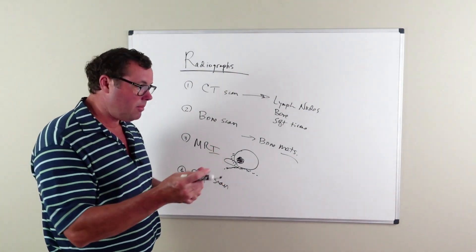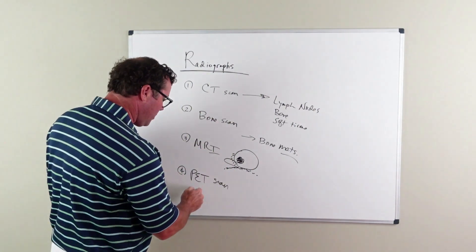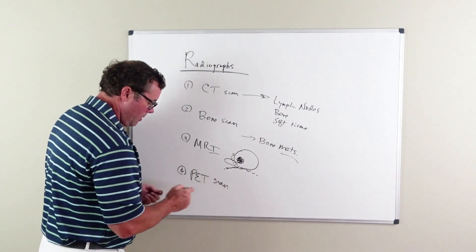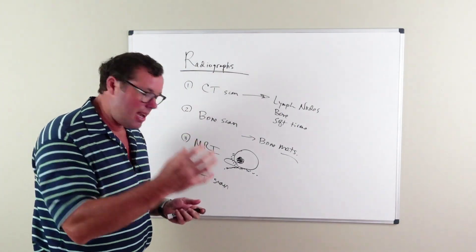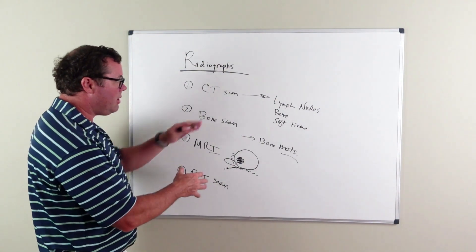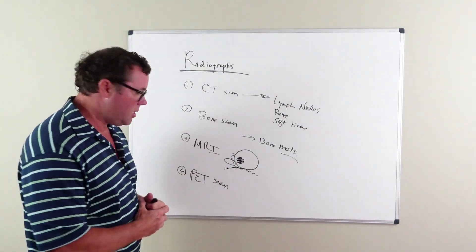You're given a tracer that is taken up specifically by prostate cancer cells. With imaging, these cancer cells light up and you're able to see them easier than you would with just a basic CT scan.